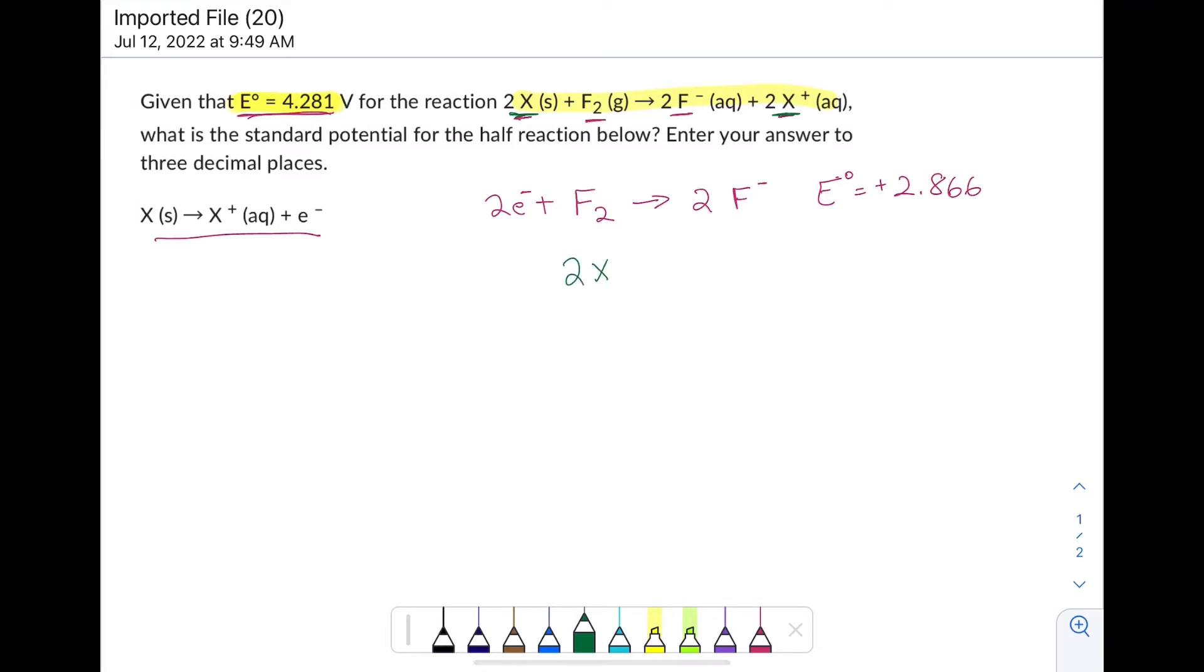So 2X goes to 2X plus is my other half reaction. It also needs a couple of electrons to balance it. This is the oxidation half reaction. Can't look it up on the table because I don't know what X is. That's the whole point.